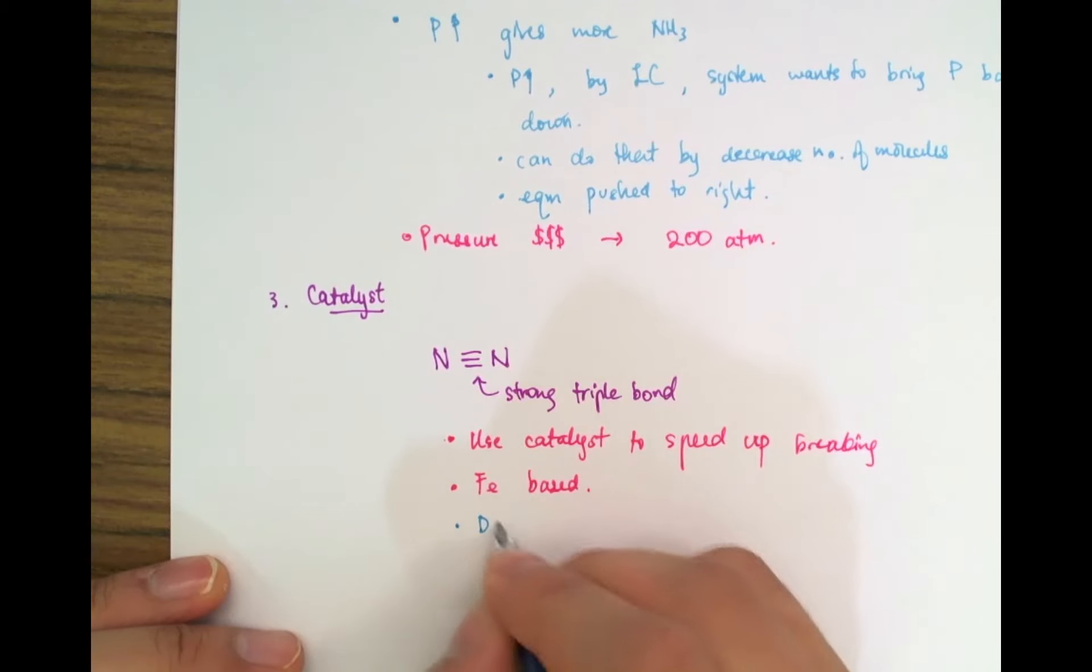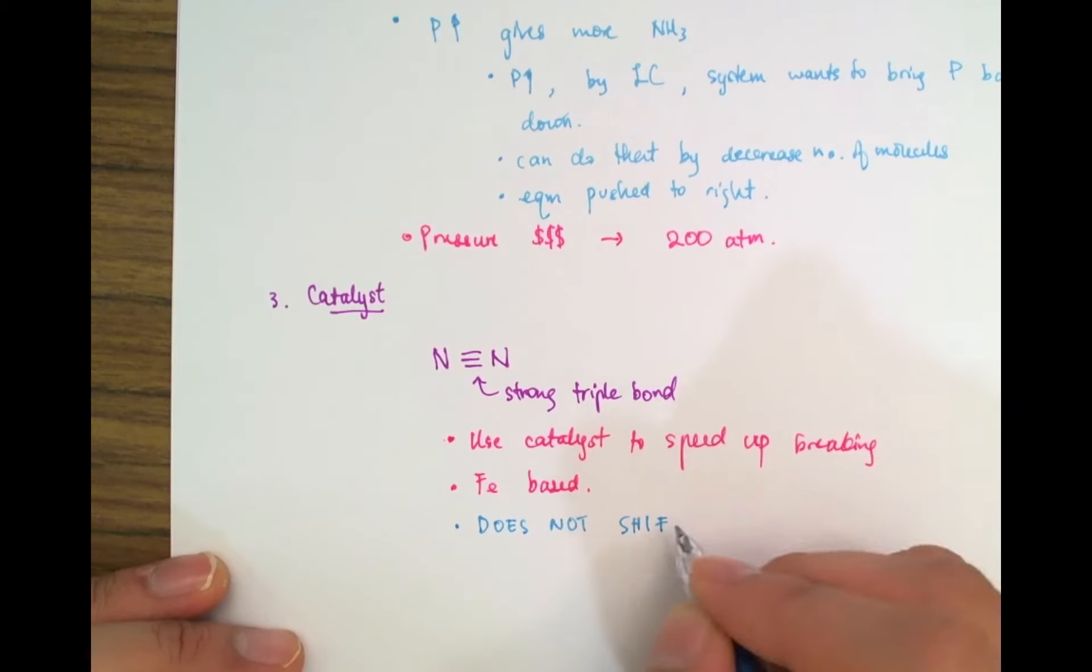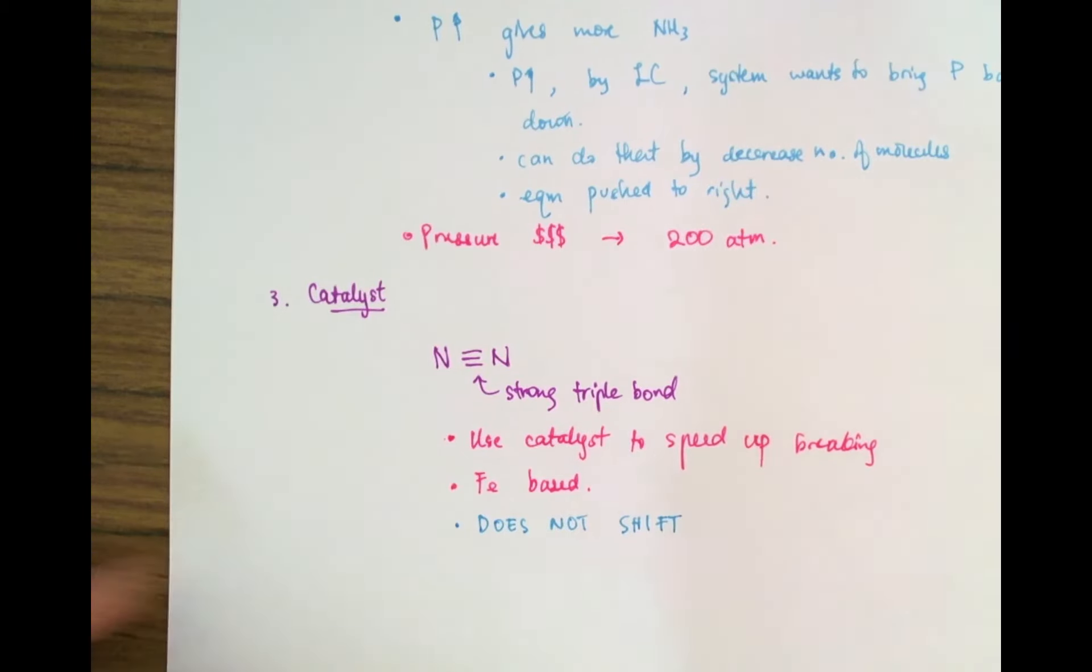So we use some iron-based catalysts to speed up the breaking of that triple bond. And as you recall from the previous video on the basics of equilibrium, this does not shift the equilibrium. Because the rate of reaction in both directions, in both forward and reverse directions, are increased by the same amount. Equilibrium stays the same, but it will speed up the reaction so that saves me money. Because in industry, time is money.